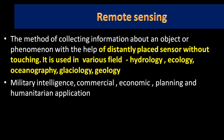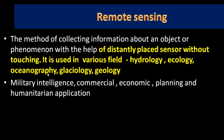In Remote Sensing, sensors are placed in aircraft and photographs of Earth's surface are taken without touching it. Remote Sensing is used in various fields such as Hydrology, Ecology, Oceanography, Glaciology, and Geology, and has wider applications in fields like military intelligence, commercial, economic, planning, and humanitarian applications.